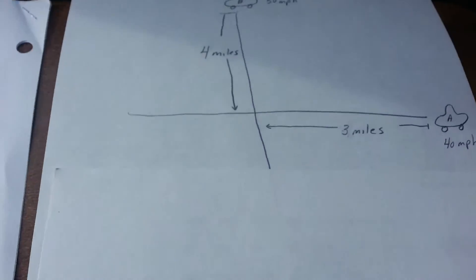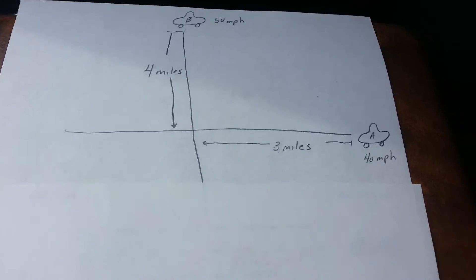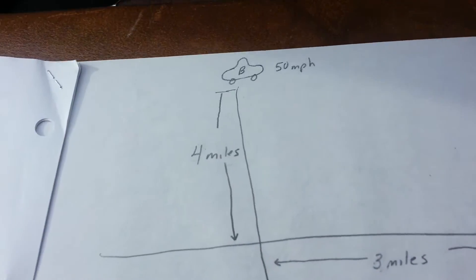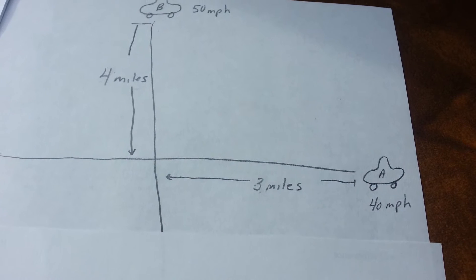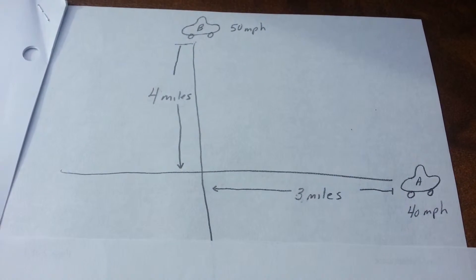We can draw a graph showing car A and car B. Car A traveling at 40 miles an hour and car B at 50 miles an hour.